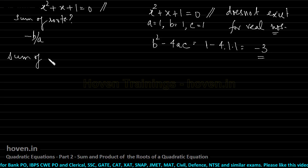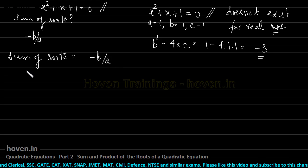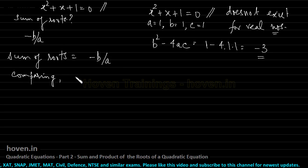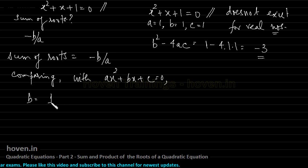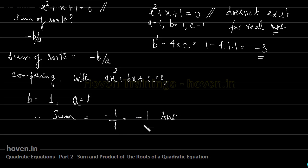So these are the steps. Sum of roots is minus b by a and comparing with ax square plus bx plus c equal to 0. What is b? b is 1 and c is also, sorry a is required, a is 1. b and a are both 1. Therefore sum of the roots is equal to minus 1 by 1 is equal to minus 1 is the answer.